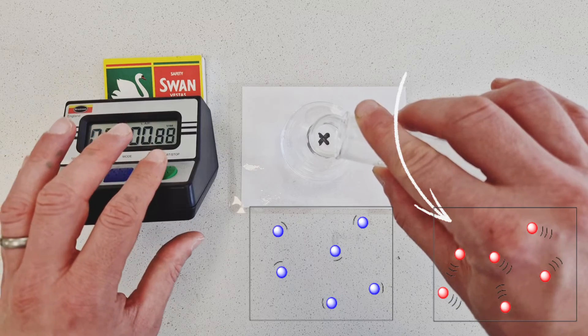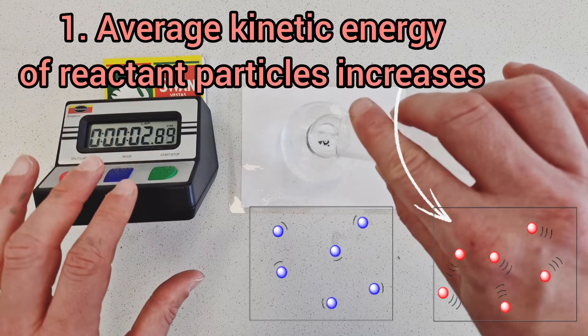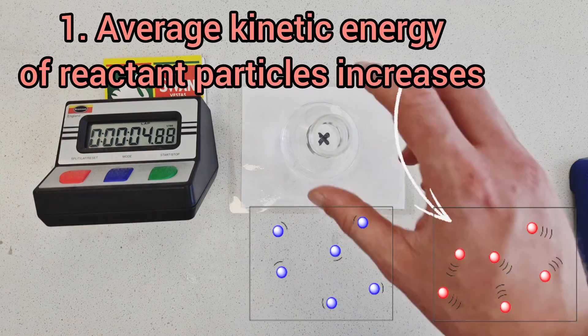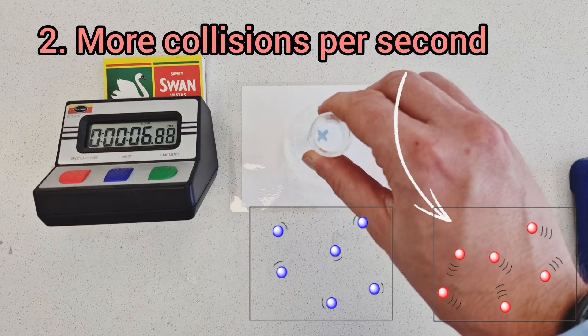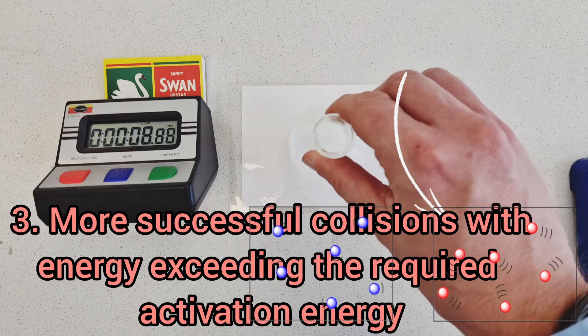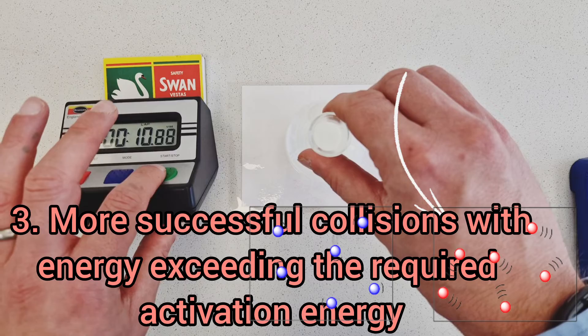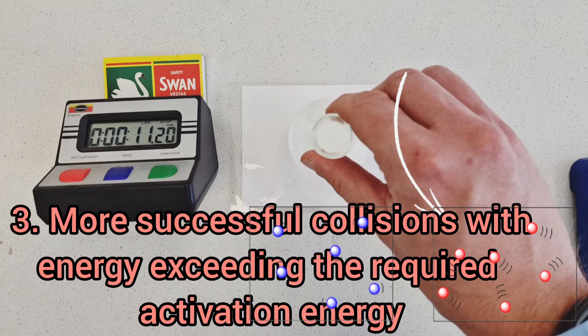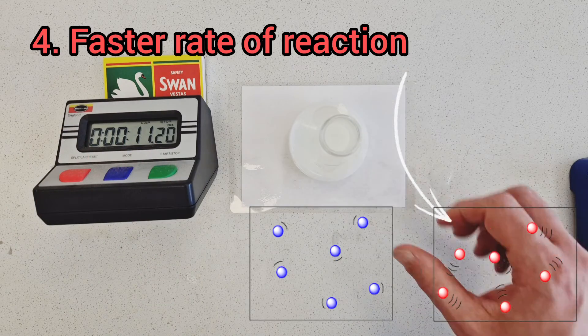So, this time we have a relatively high temperature scenario. The average kinetic energy of the particles will be higher, they're moving around faster, there'll be more collisions per second and therefore, proportionally, more successful collisions per second with energy equal to or exceeding the required activation energy resulting in a faster rate of reaction.